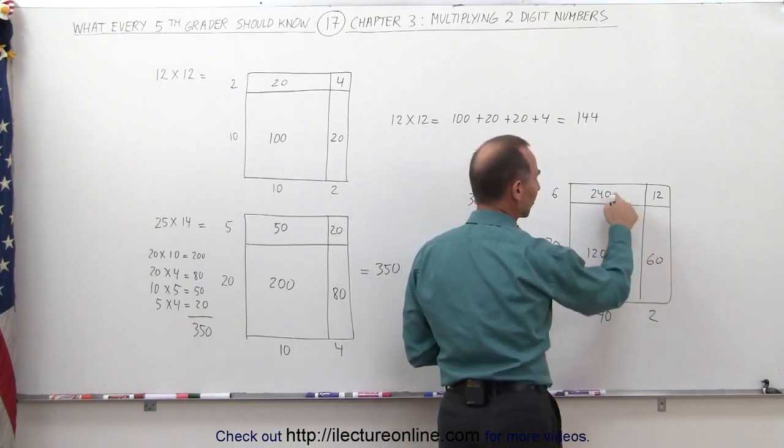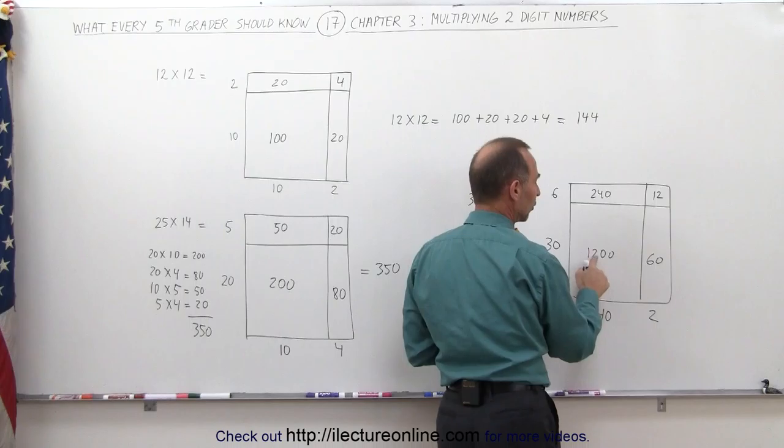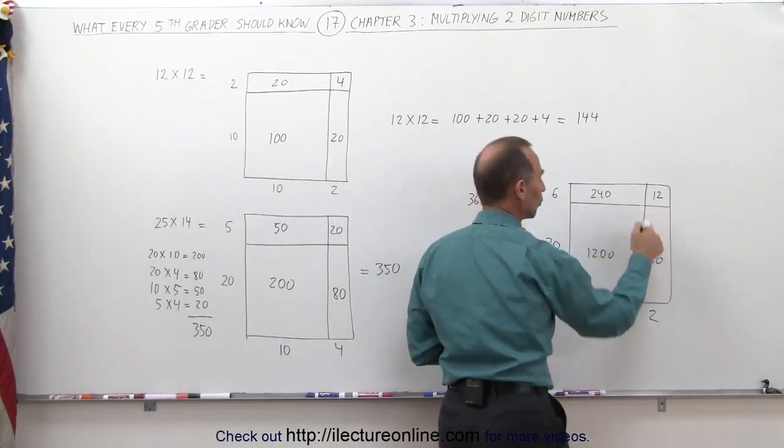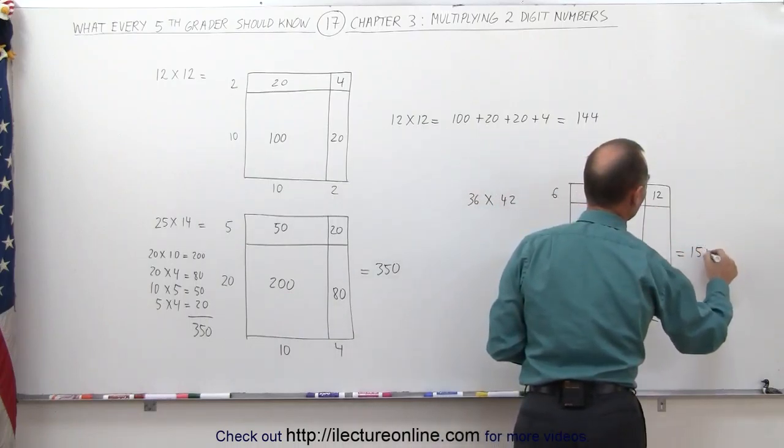Now 240 plus 60, that's 300, add that to 1200, 1200 plus 300 is 1500, add that to 12, you get 1500 and 12.